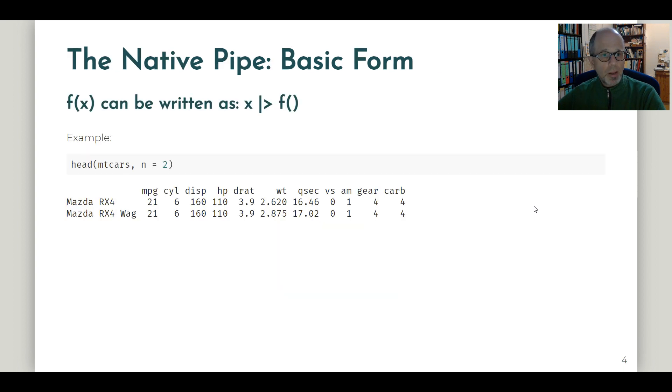Right, but back to the native pipe. So what is it? Let's talk a little bit about it. The basic form is that f of x can be written as x and then apply the function f. So a simple example. We can look at the mtcars data set and use the head function.